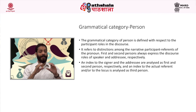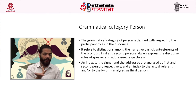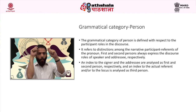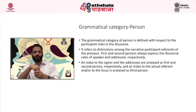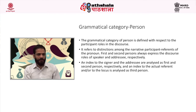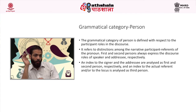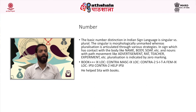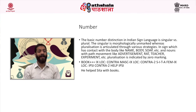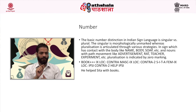Now we are going to talk about grammatical categories. A few of the grammatical categories are person, number, gender, tense, and aspect. The grammatical category of person is defined with respect to participant roles in the discourse — it refers to distinctions among narrative participant reference of the pronoun. First and second persons always express the discourse roles of speaker and addressee respectively. The second grammatical category is number. The basic number distinction in Indian Sign Language is singular vs. plural — the singular is morphologically unmarked whereas pluralization is articulated through various strategies.